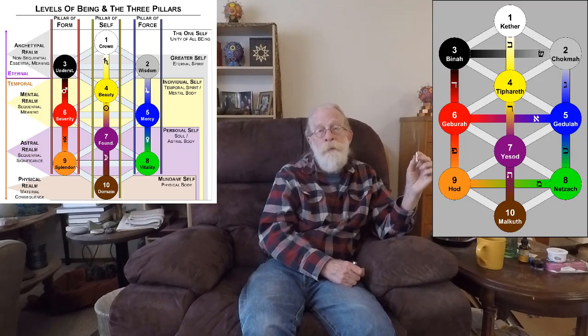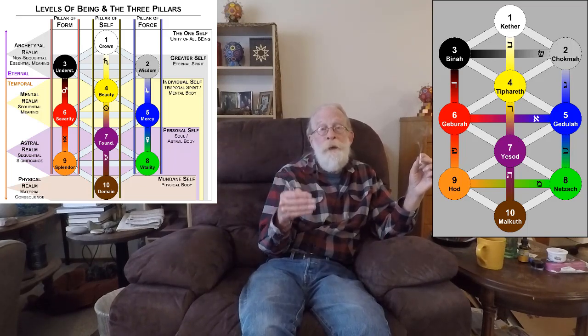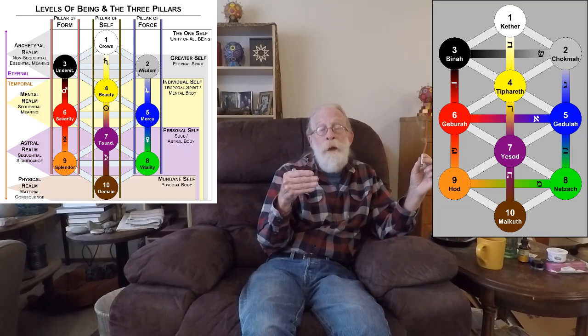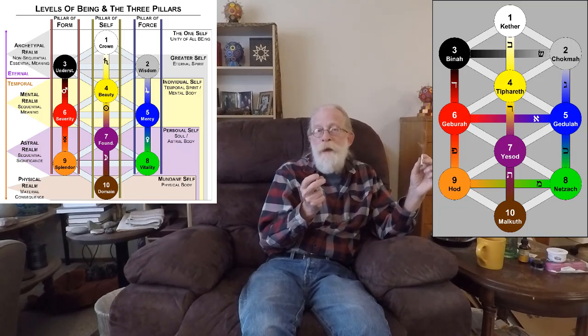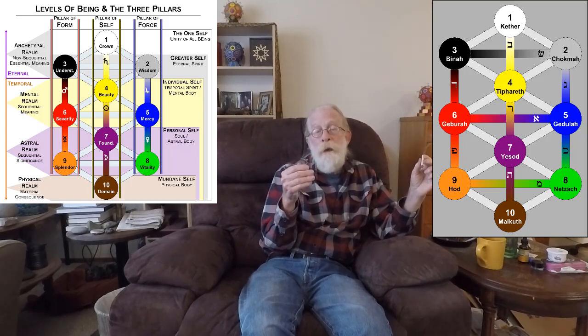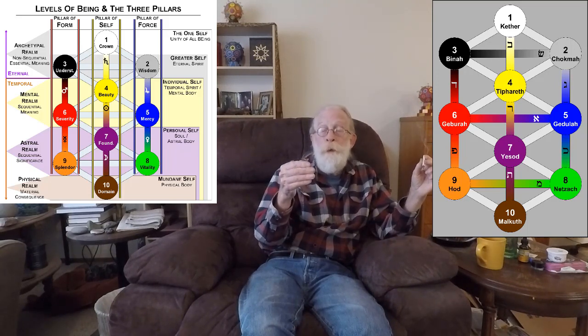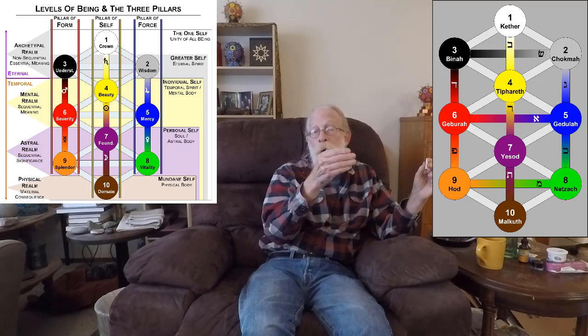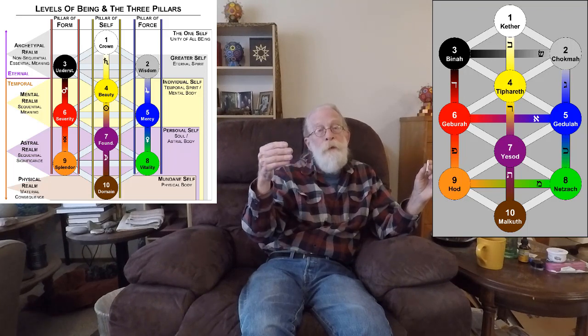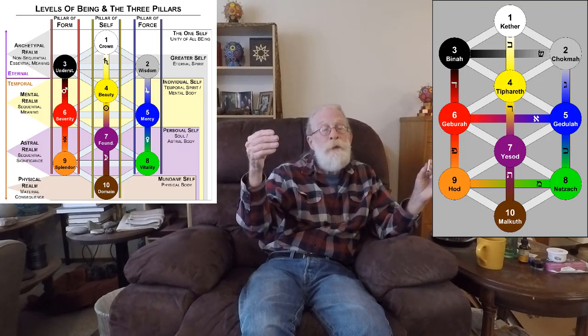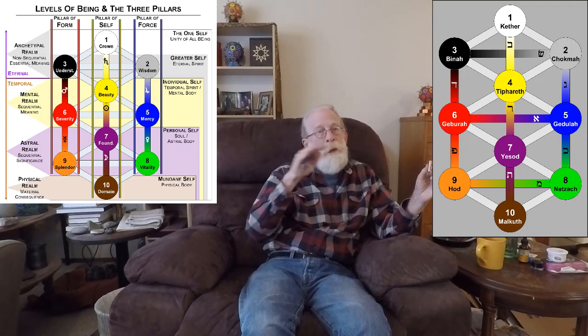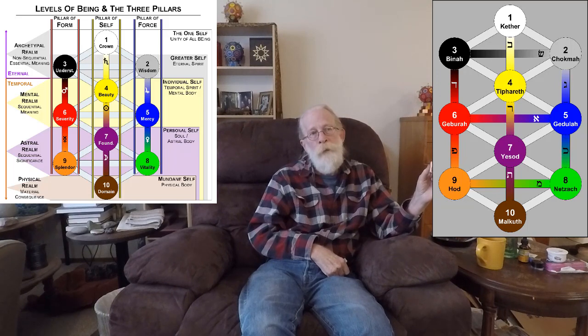So the path of Saturn takes us from Kether to Tiferet, from the I, the one self, to the solitary self, that individualized little reflection of the I. Likewise, the path of Jupiter takes us from Chokmah to Gedulah, from the supernal realm to the mental realm. And the path of Mars, Daleth, takes us from Binah to Gevura, from the supernal realm to the mental realm. So these three take us from supernal to mental.